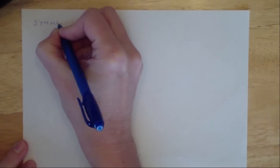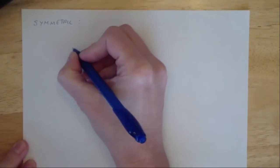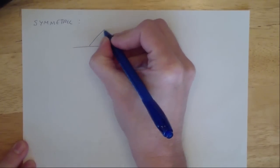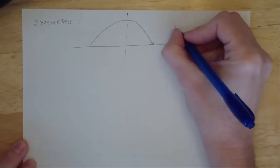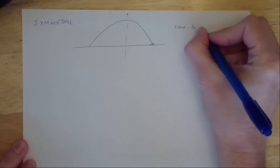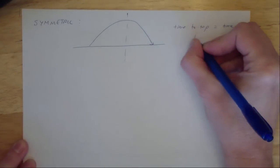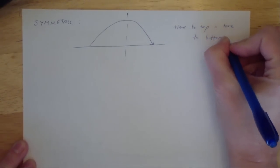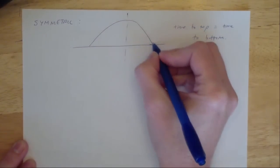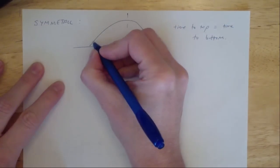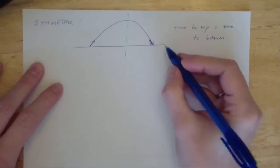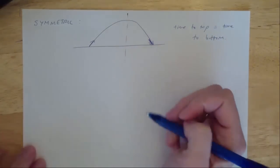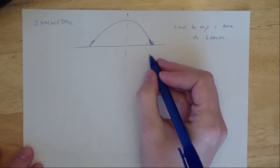Because it's parabolic motion, it's going to be symmetric. So if you have level ground and parabolic motion, the time to the top equals the time to the bottom — the time on the way up equals the time on the way down. Further, the speed at launch is going to equal the final speed right before it strikes the ground. These are useful tools for problem solving.